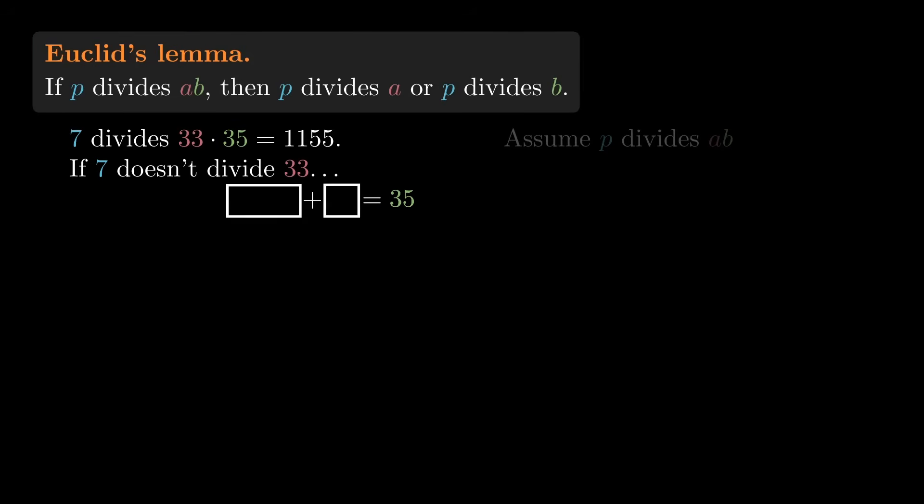The good news is that we already have two multiples of 7 to work with. 1155 is a multiple of 7 by assumption. And of course 7 is a multiple of 7. So if we find some multiple of 1155 and some multiple of 7 that add up to 35,